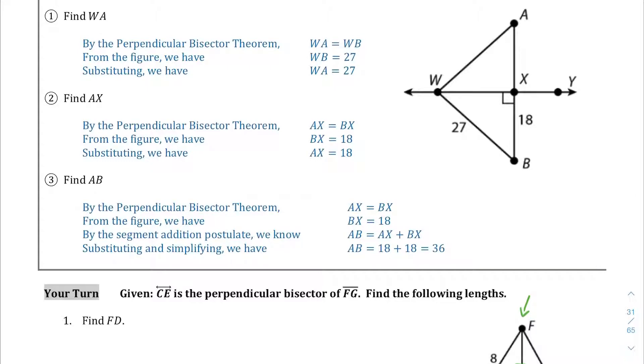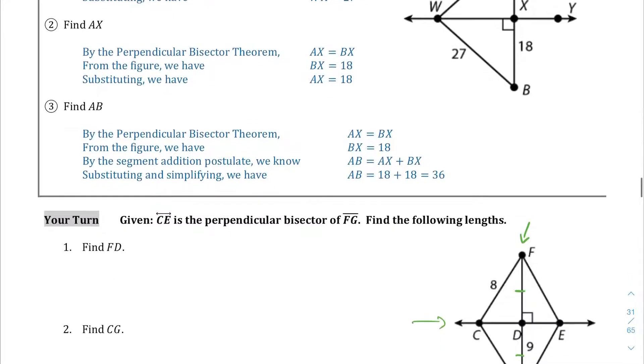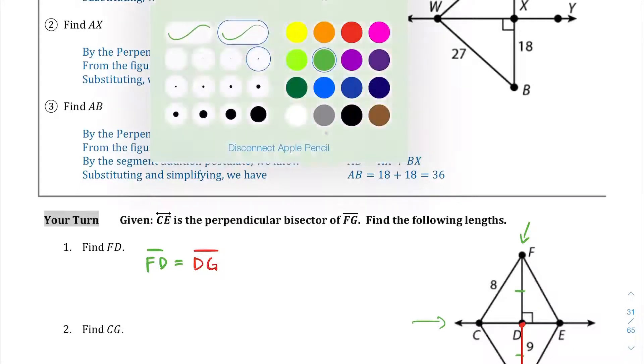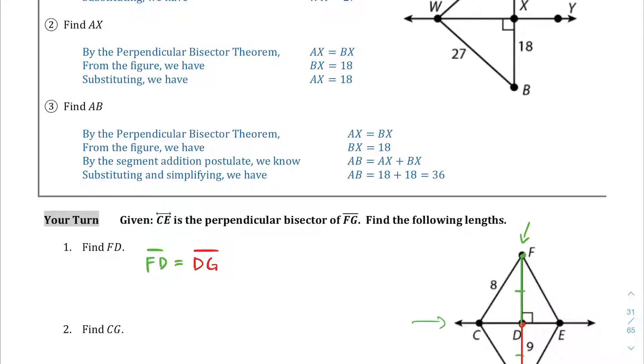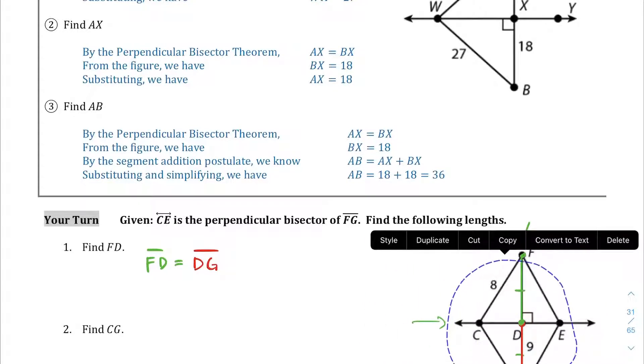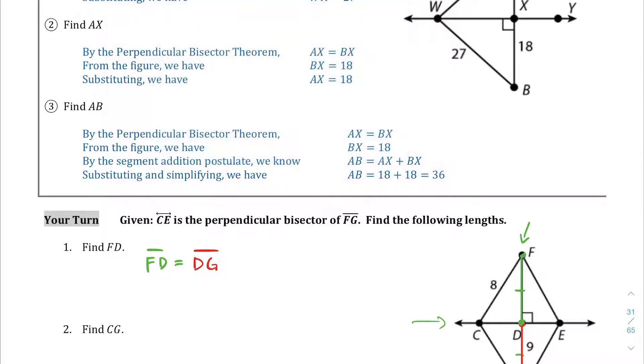The first thing we have to establish is the perpendicular bisector theorem. Basically we're going to say we're going to establish the fact that FD, or segment FD, is equal to segment DG. So what we're saying is this line right here from D to G, this segment right here, is equal to this segment from F to D. If I can break this out, FD is equal to DG, and that's because of the perpendicular bisector theorem.